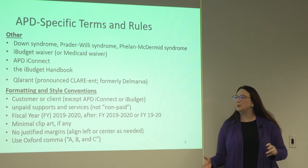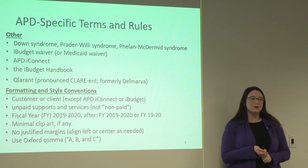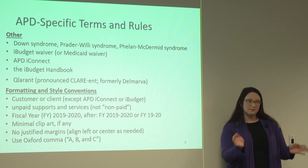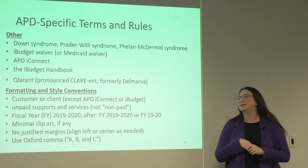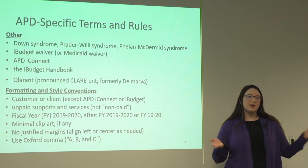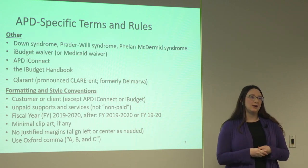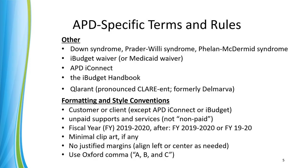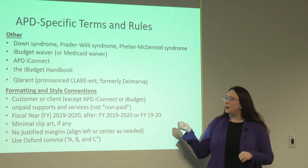We call our customers or clients. In APD iConnect and iBudget systems, we call them consumers — I understand in those instances it's appropriate to use consumer. In terms of a lot of our communications, brochures, the Champion, that kind of thing, we will call them customers. Clients is also fine. I've seen 'non-paid' but it's unpaid supports and services. For fiscal year, you can say fiscal year 2019, use FY, and it's totally fine to say FY 2019-2020 or just FY 19-20.